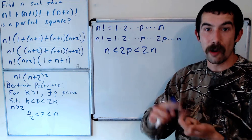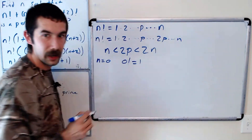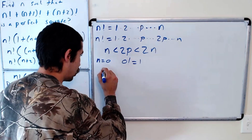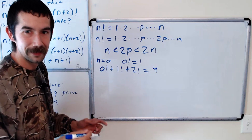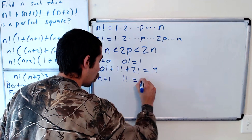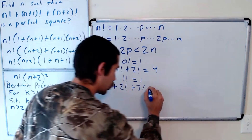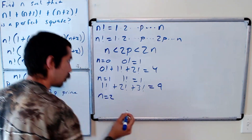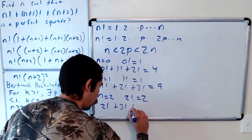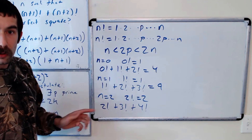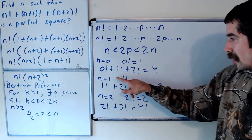The last thing to check is n equals 0, n equals 1, and n equals 2. For n equals 0: 0 factorial equals 1, which is a perfect square, and 0! + 1! + 2! = 1 + 1 + 2 = 4, which is also a perfect square. For n equals 1: 1! + 2! + 3! = 1 + 2 + 6 = 9, which is also a perfect square. For n equals 2: 2! = 2, which is not a perfect square, and 2! + 3! + 4! is also not a perfect square.